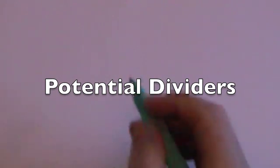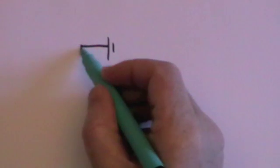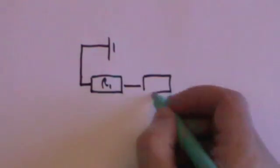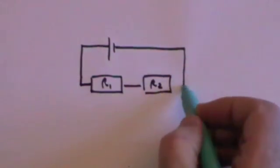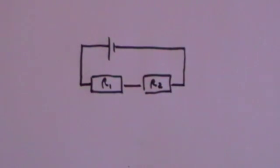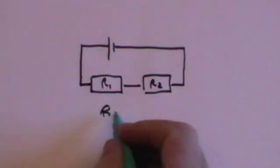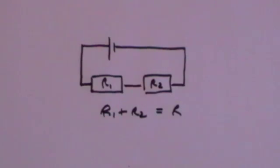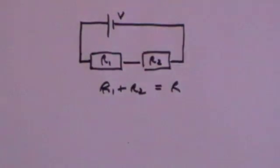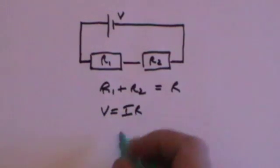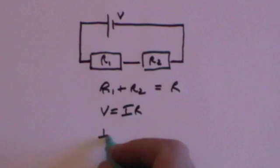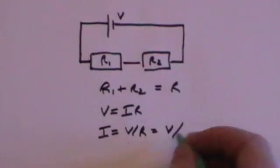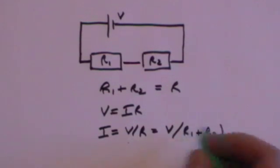In our video on series circuits we learned that if you have two resistors R1 and R2 in series, then the total resistance in the circuit is just the sum of the two resistors, so it's R1 plus R2 as the total resistance. Then if this is a voltage V, you use Ohm's law V equals IR, which means that I is equal to V divided by R, which is equal to V, the voltage, divided by the total resistance R1 plus R2.